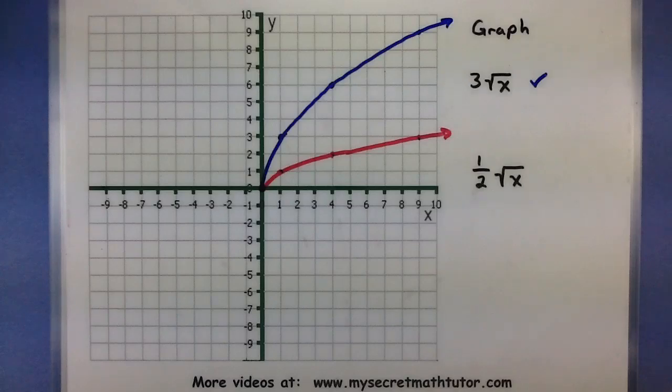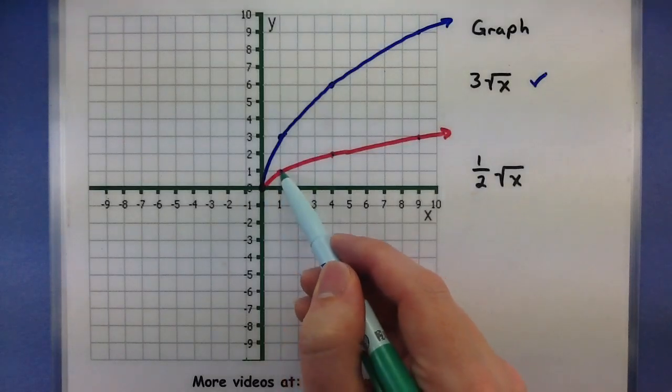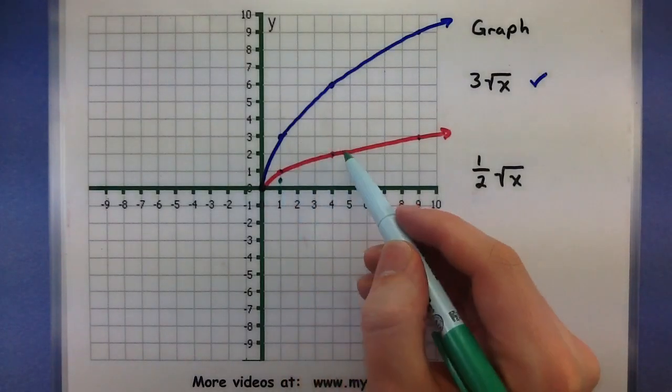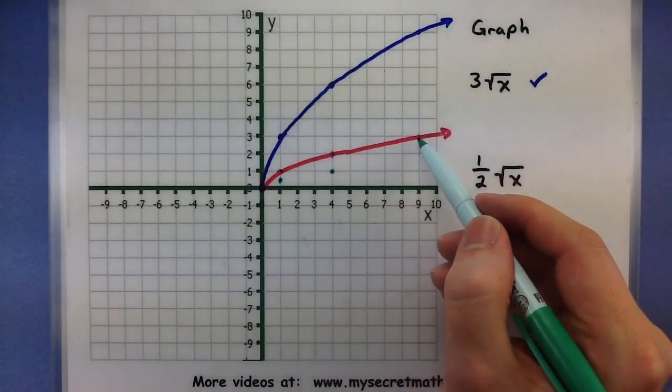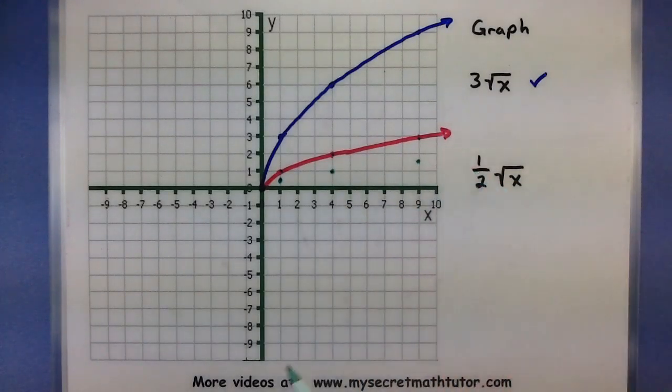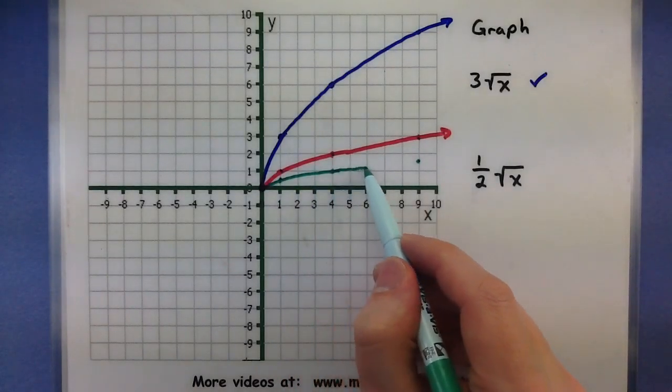Now let's multiply on the outside by a number between 0 and 1, so 1 half is a good candidate. We'll do the same thing, we'll take all of the y values and we'll multiply them by this 1 half. So 0 times 1 half starts at the same spot. 1 times 1 half is 1 half. 2 times 1 half is 1. And 3 times 1 half is 1 and a half, so this will make it look very shallow or narrow.